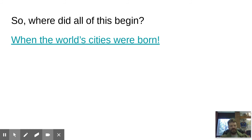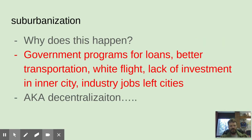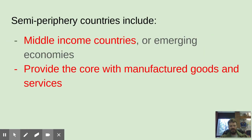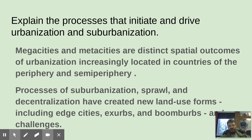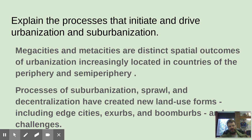Let's wrap up with our objectives. Megacities are urban areas with 10 million people; metacities have 20 million and are really spread out. Spatial outcomes of urbanization are located in countries on the periphery and semi-periphery — don't forget Wallerstein's model. Then the processes: suburbanization, sprawl, and decentralization have created new land use forms — edge cities, exurbs, and boomburbs.